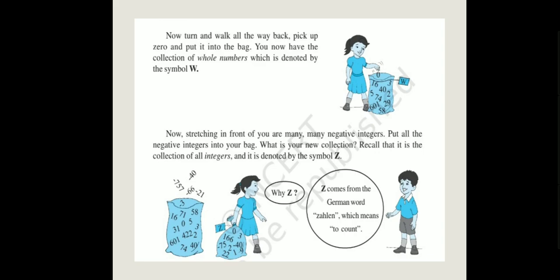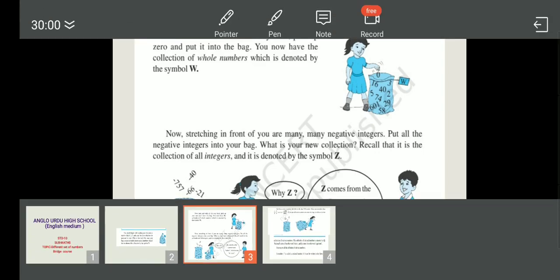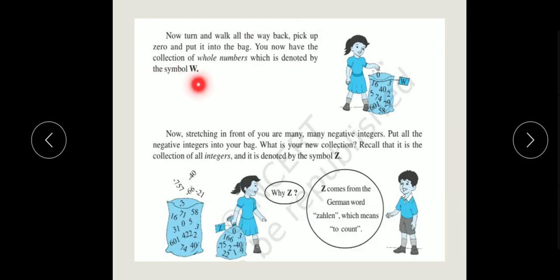Now that we have also collected 0 with our natural numbers, we have new collection of the numbers. Then, we called it whole numbers. And denoted by the symbol W. Look, friends. The whole number, we denote by the symbol W. Whole numbers. W for whole numbers.